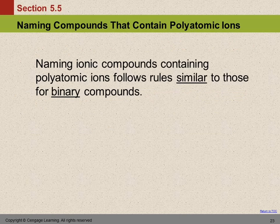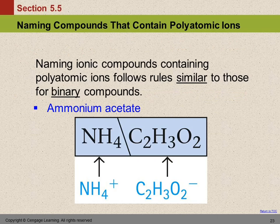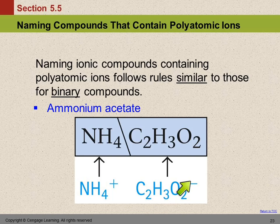When we name compounds that contain polyatomic ions, the rules are really similar to the rules we learned for binary compounds. For example, ammonium acetate: ammonium is the name of the first ion, and acetate is the name of the second ion. Both of those are found in the table of polyatomic ions. Ammonium ion has its charge, and acetate is C2H3O2 with a minus-one charge. With plus-one and minus-one charges, we need one of each, and we squish them together for the compound formula.